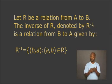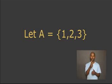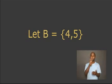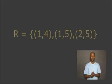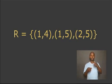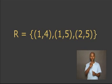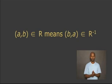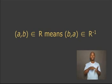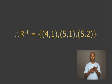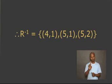Let us try a simple example. Let A equal the set of 1, 2, and 3. Let B equal the set of 4 and 5. How can we give the inverse of the relation R equals the ordered pairs (1, 4), (1, 5), and (2, 5)? If A is R-related to B, that means B is inversely R-related to A. Thus, the inverse of R equals the ordered pairs (4, 1), (5, 1), and (5, 2).